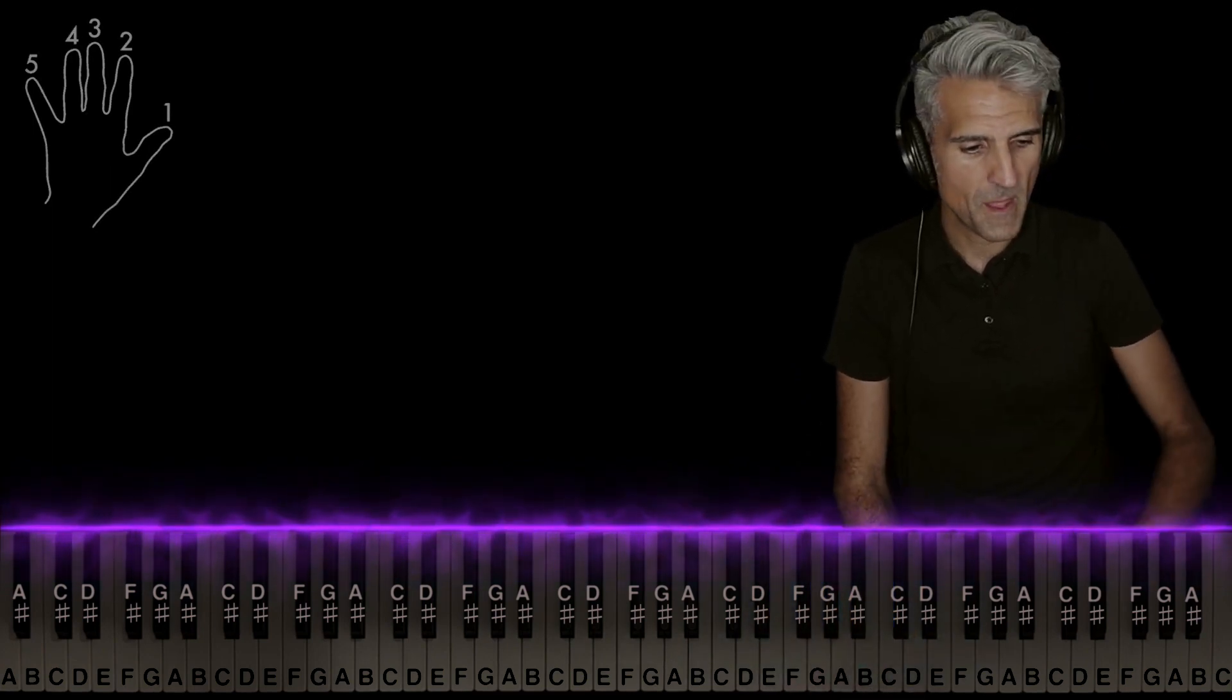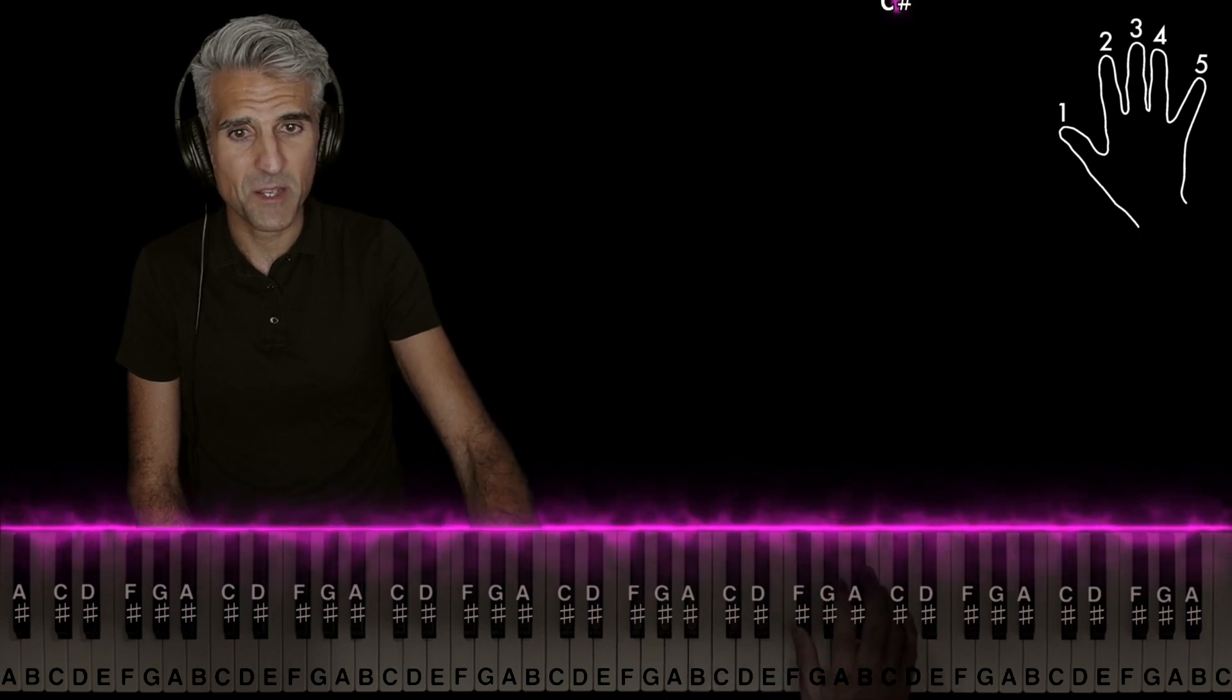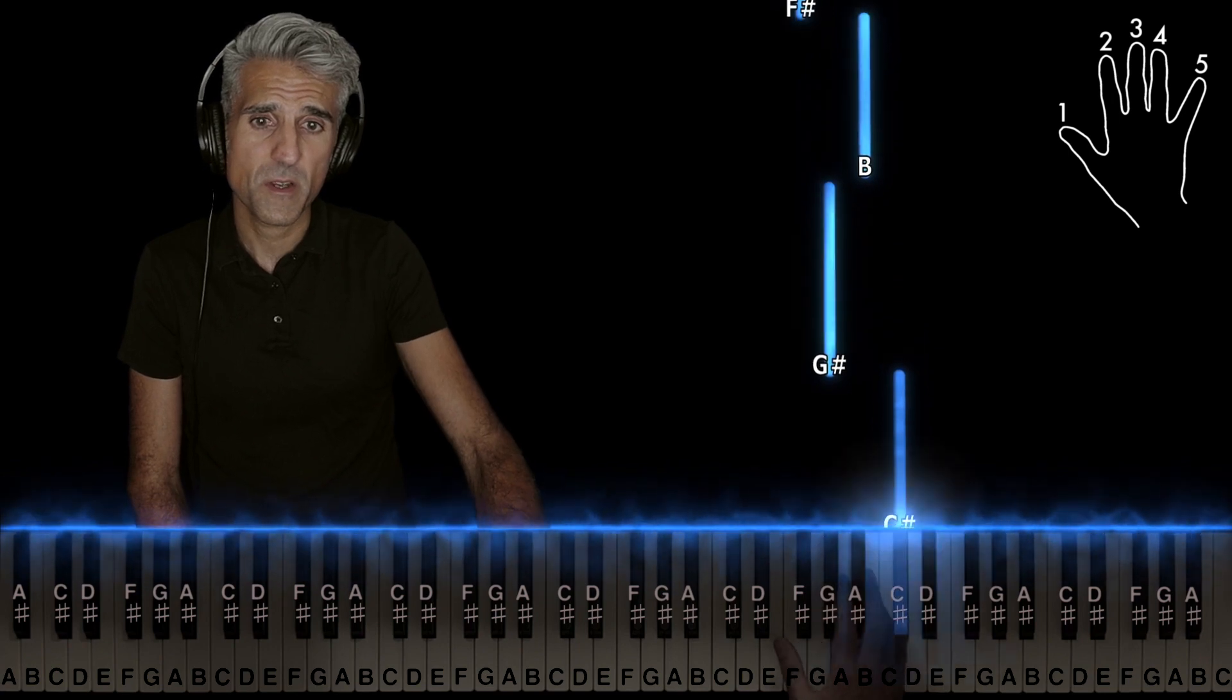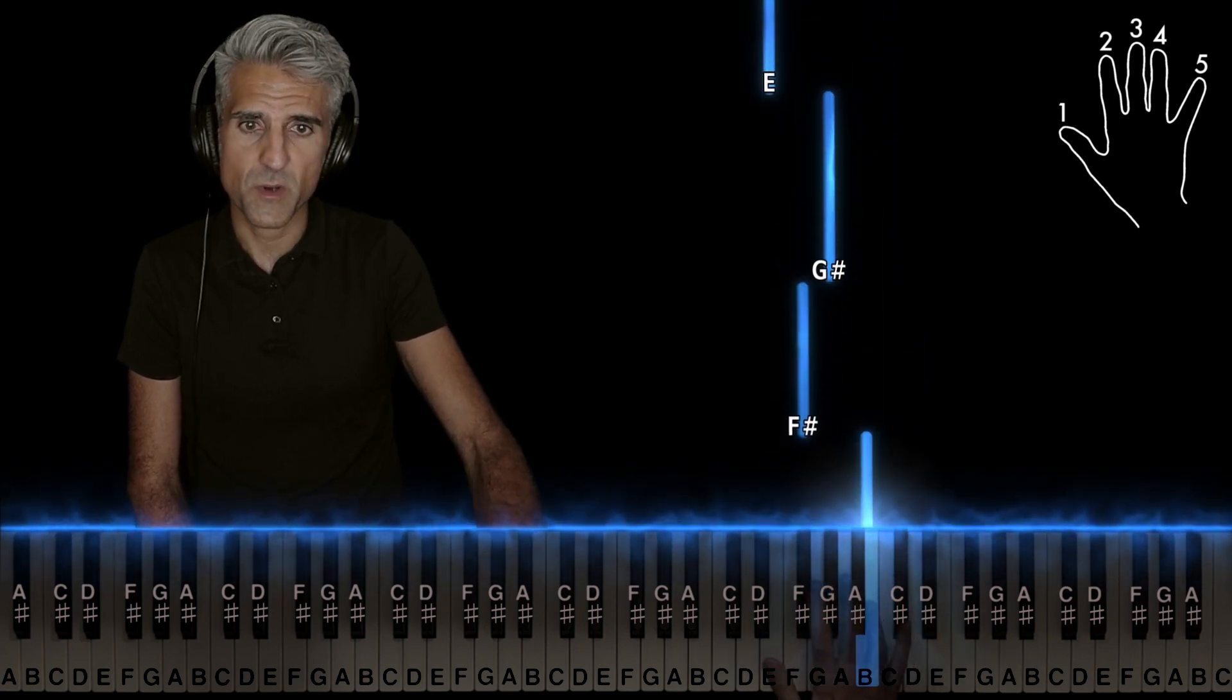And that just starts all over. As far as the right hand goes, it has this beautiful descending cascading passage based around a C sharp minor scale. Place five on C sharp, two on G sharp, four on B, two on F sharp.